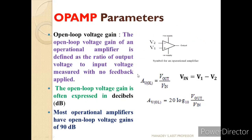Now let us see the op-amp parameters. The first parameter is open loop voltage gain. Open loop voltage gain means the output is not connected to the input — there is no feedback present. The gain AV(OL) is calculated as output divided by input. VIN is the differential input voltage where V1 is connected to positive and V2 to negative, so VIN = V1 − V2.